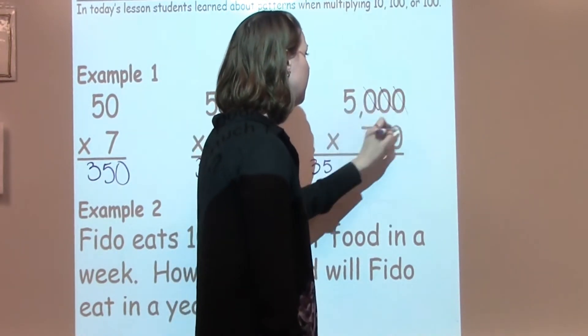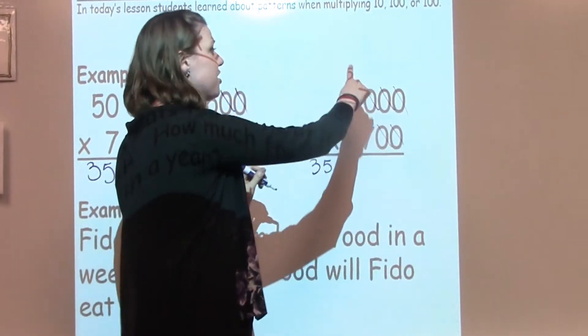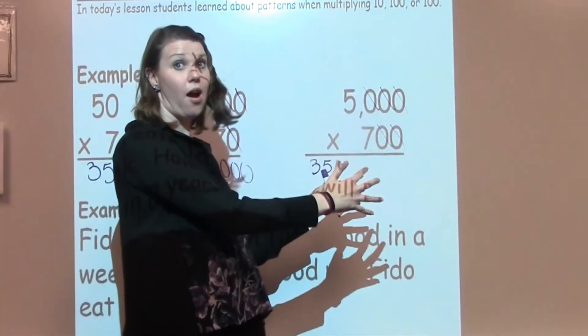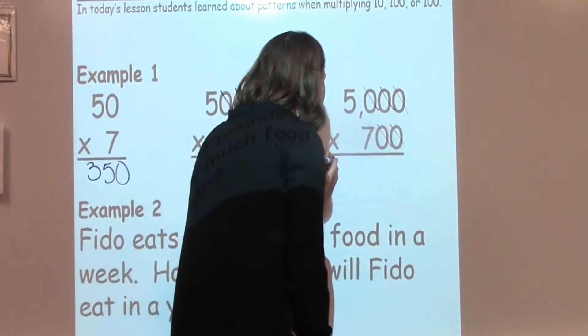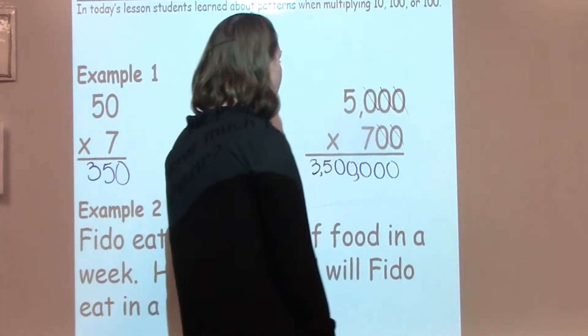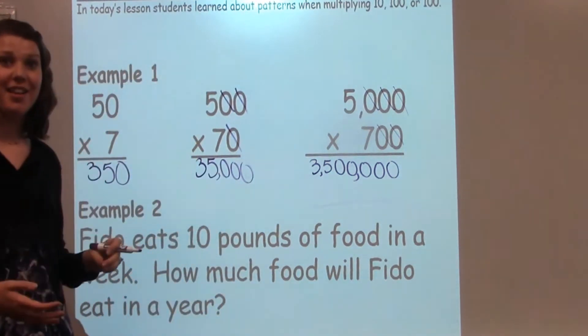I need to use 1, 2, 3, 4, 5 0s. I have to cross off my 0s and count them as I'm going to make sure that I add enough into my problem. So there was 5 here, so I'm going to add 5 down here. There's my 5. So now I have 3,500,000.